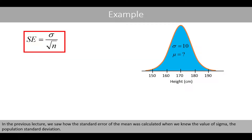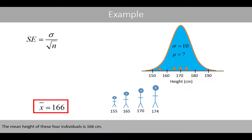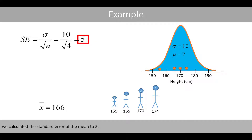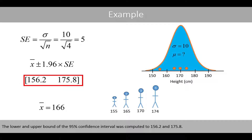In a previous lecture, we saw how the standard error of the mean was calculated when we knew the value of sigma, the population standard deviation. To estimate the mean height of the population, we took a sample of four individuals and computed the mean. The mean height of these four individuals is 166 centimeters. Since we knew the standard deviation and the sample size, we could calculate the standard error of the mean to 5. We then calculated the 95% confidence interval by taking the estimated mean plus or minus 1.96 times the standard error.